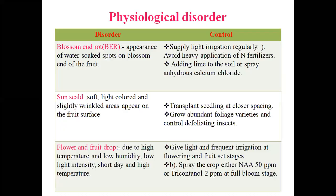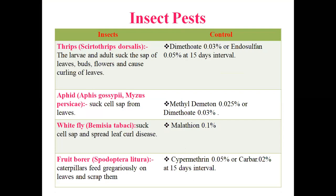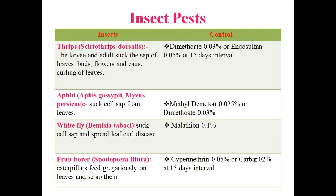Disorders: blossom end rot is observed in capsicum — avoid heavy application of ammoniacal fertilizers and maintain acidic soil pH. Sun scald is also a major problem in capsicum; transplanting seedlings closer and growing high-foliage varieties helps. Flower and fruit drop is common in both chili and capsicum — more drop occurs under temperature and humidity fluctuations. Auxin sprays like NAA are recommended; tricontinol is a mixture of NAA with some micronutrients.